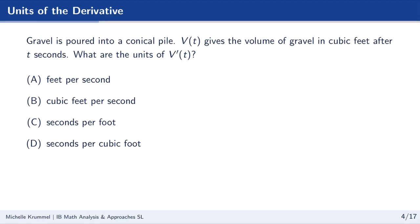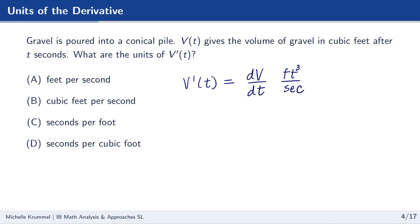For example, suppose gravel is poured into a conical pile. V of t gives the volume of gravel in cubic feet after t seconds. What are the units of v prime of t? It's helpful to convert this into Leibniz notation: v prime of t is dv over dt. T is the independent variable on the bottom; V is the dependent variable on top. The units for v are cubic feet, and the units for t are seconds. So the units on v prime of t would be cubic feet per second.